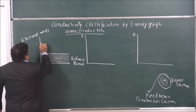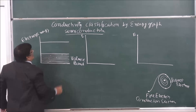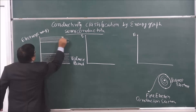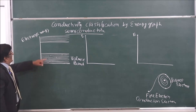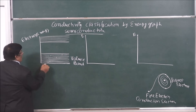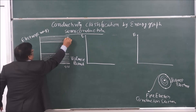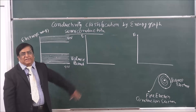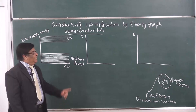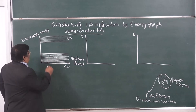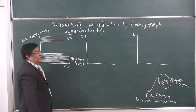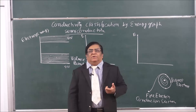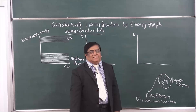An electron with enough energy to conduct will be in the conduction band. There are 4n energy levels and 4n total electrons. In the case of an insulator, all electrons are in the valence band and there is no electron in the conduction band. That means there are no free electrons, and since conduction is done by free electrons, this material cannot conduct electricity — that is why we call it an insulator.